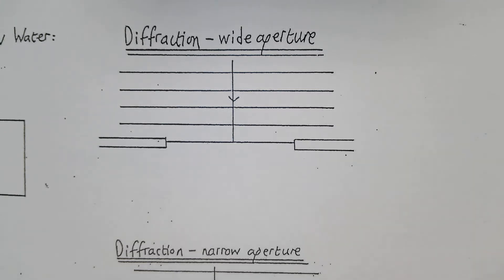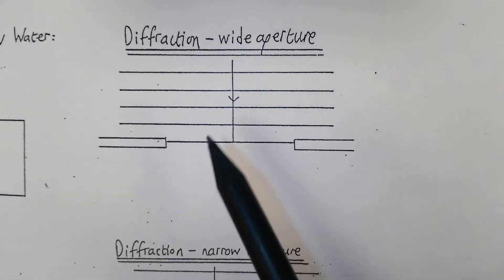Next we're going to do diffraction through the wide aperture. The diffraction of the wide aperture, in a similar way to the single obstacle, you'll get a similar level of diffraction as it passes the edge, but you'll get it on both sides.